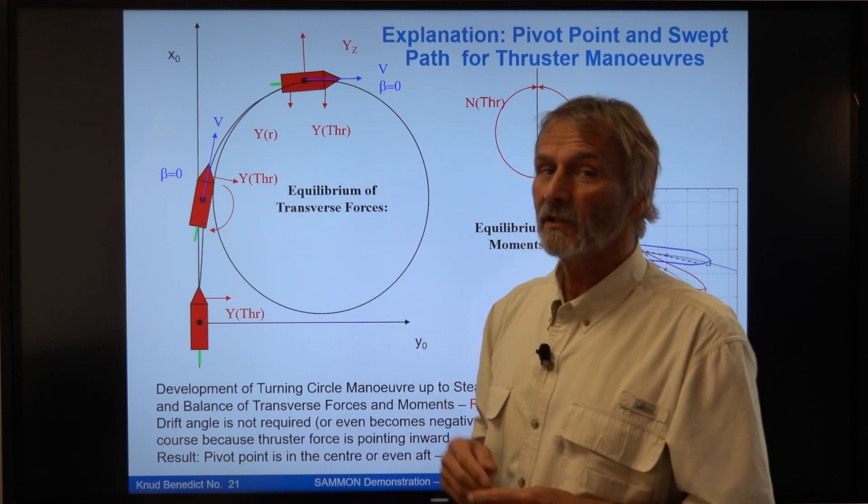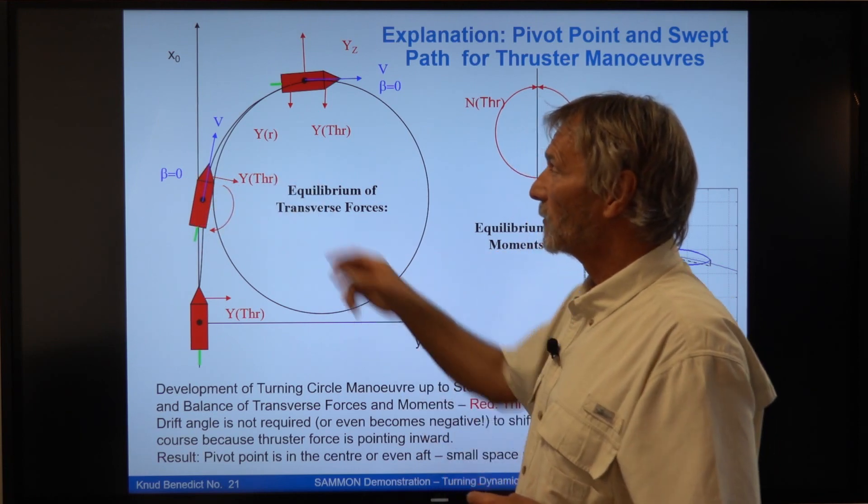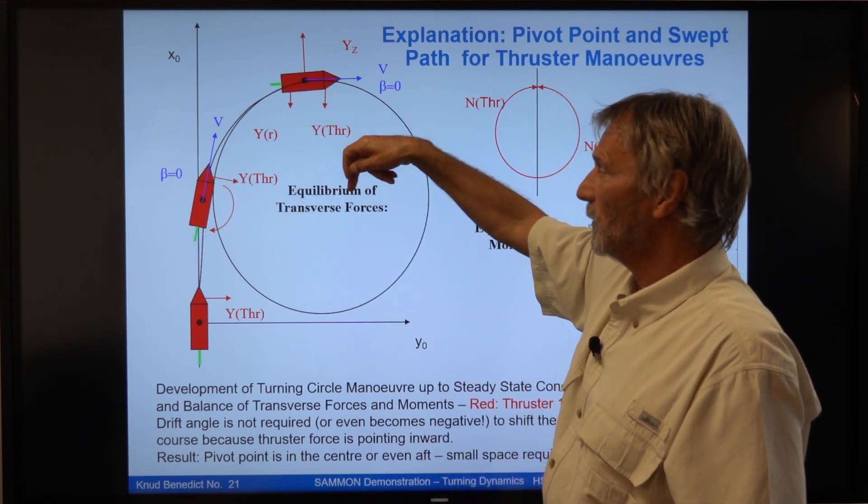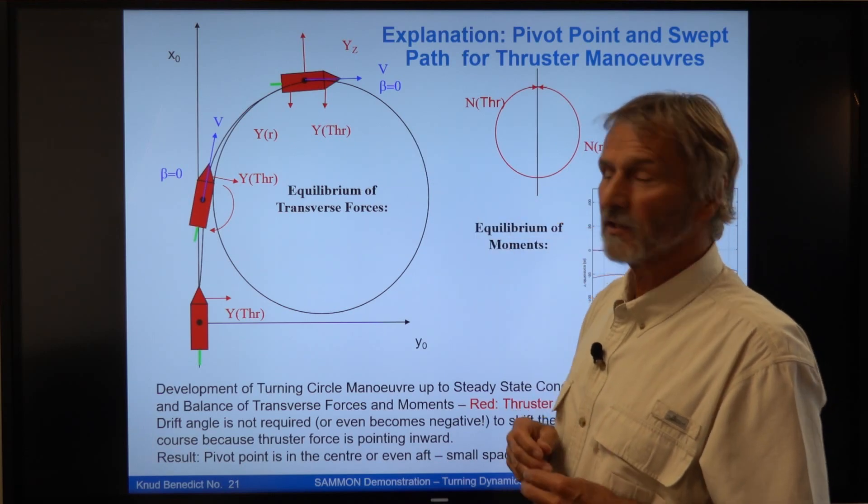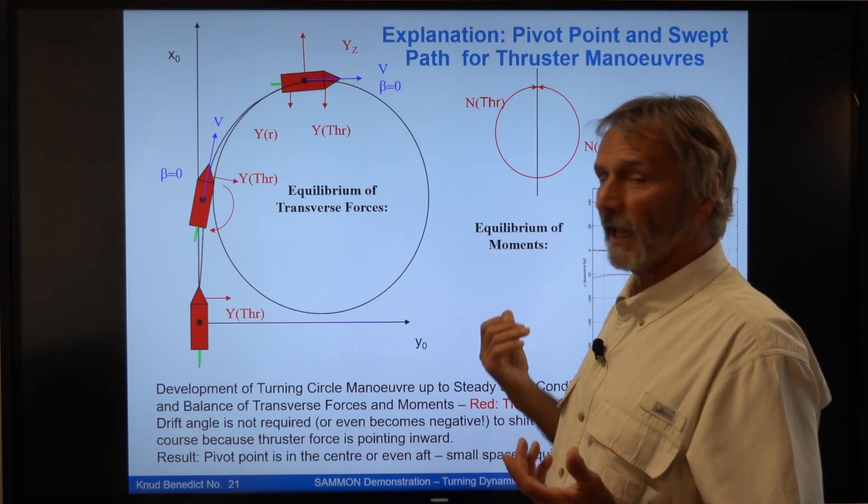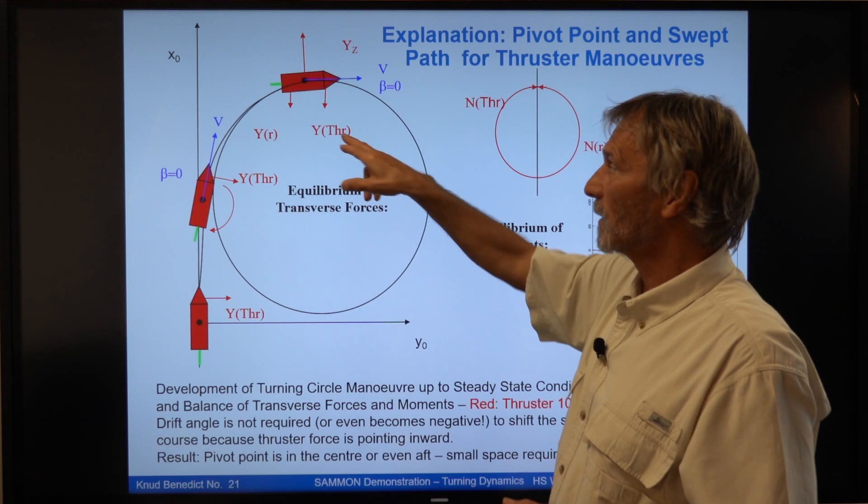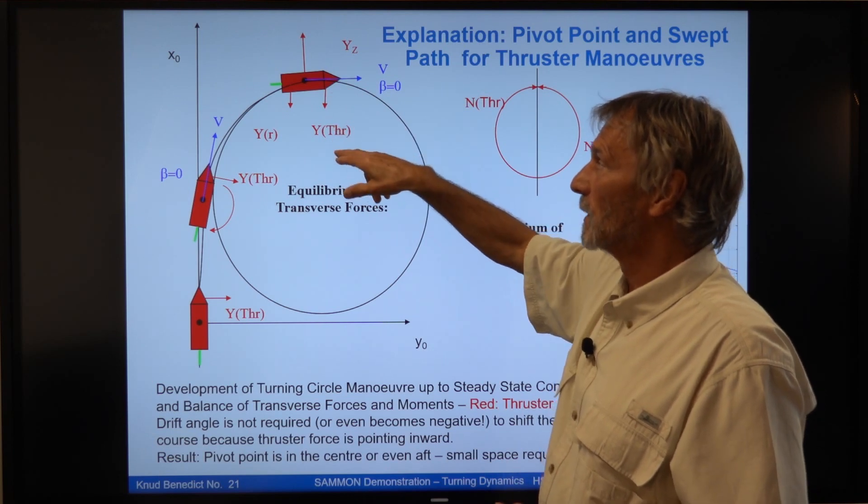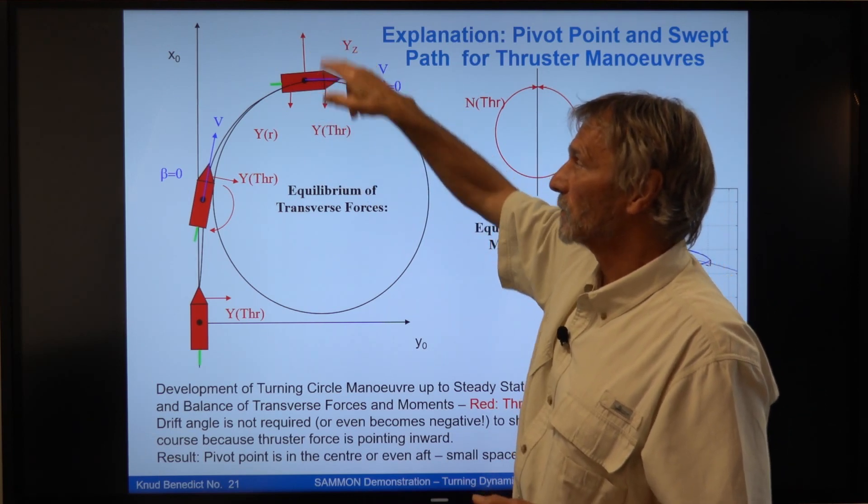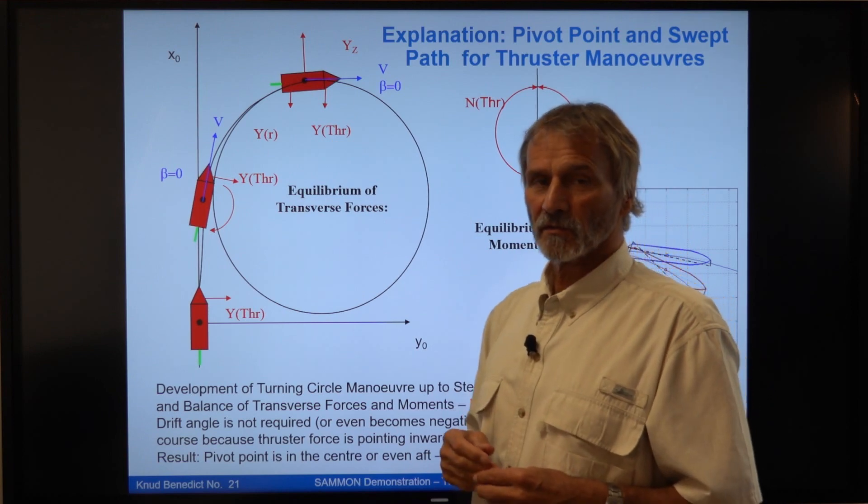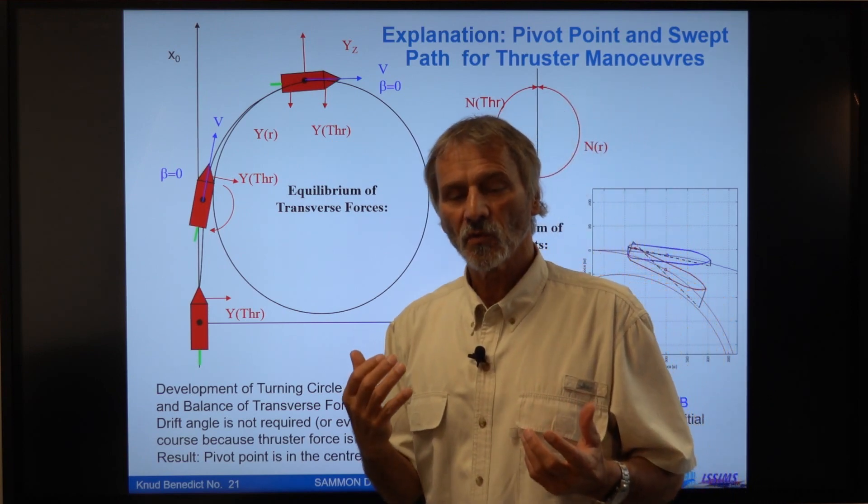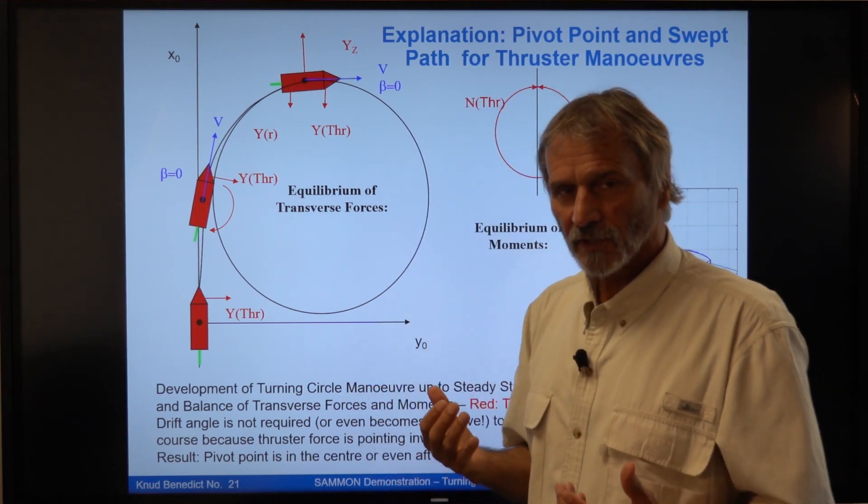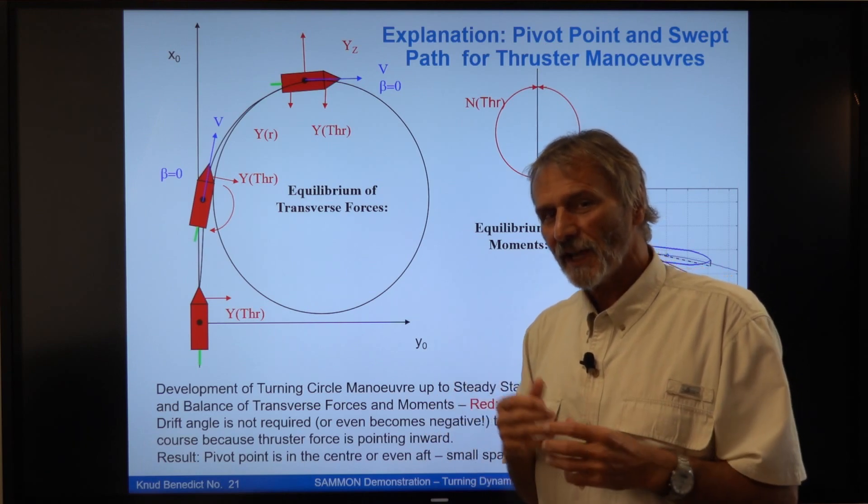You see here, the drift angle is nearly zero. And here in the final equilibrium state, in the steady state phase, we have the main forces are the thruster forces, the centrifugal forces, and the damping forces. The force due to drift is missing. It's not really necessary.